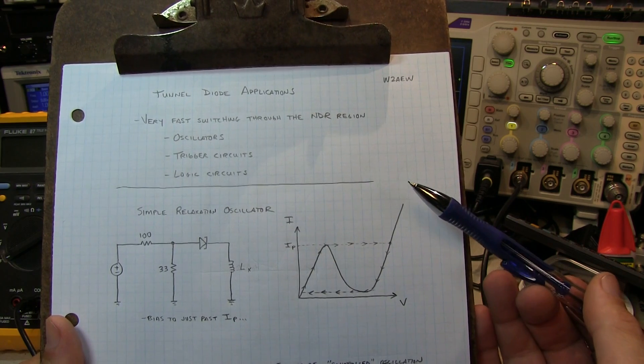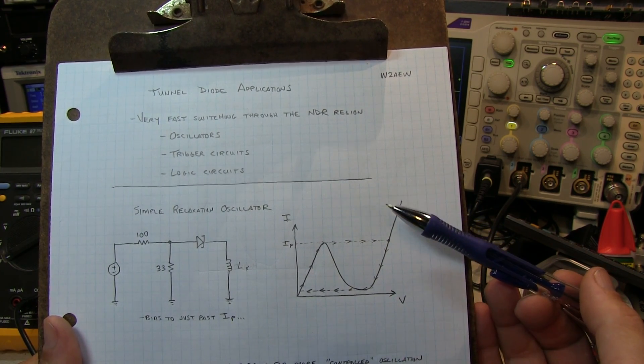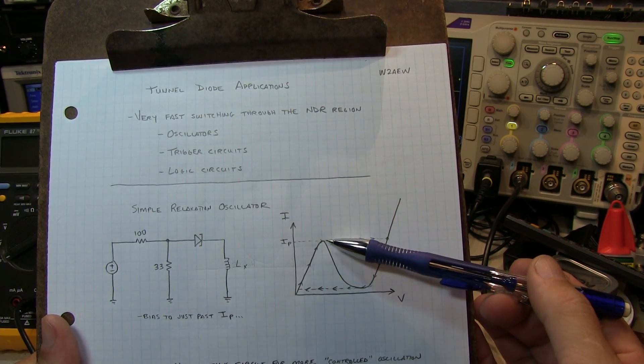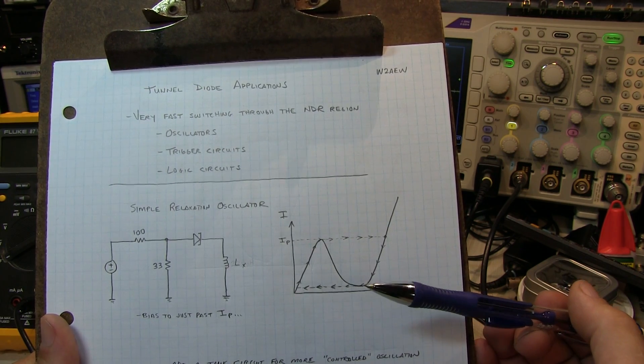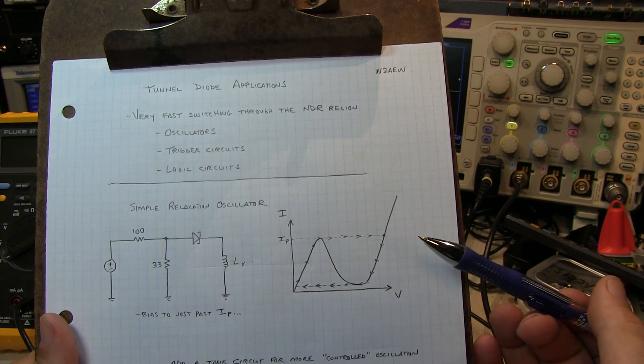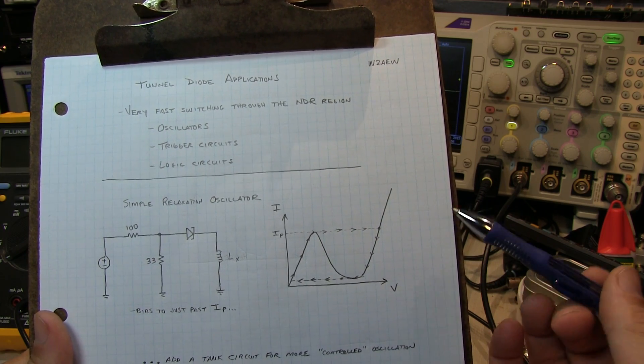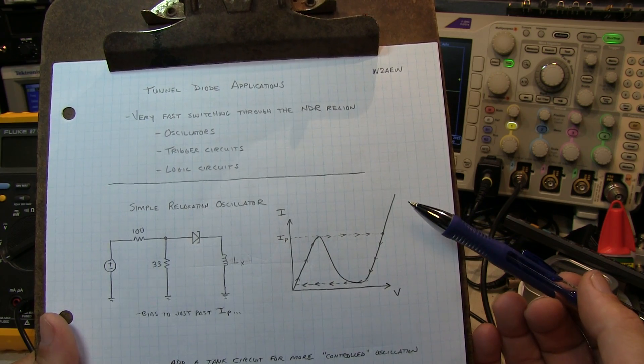Of course, when these tunnel diodes were developed in the late 50s, early 60s, semiconductors were still pretty new and the speed at which these diodes could traverse this negative differential resistance region was tremendously fast, well under a nanosecond, some of the fastest semiconductor devices available.